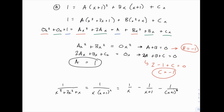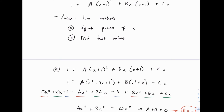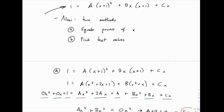So that's one approach — expand everything out and equate the powers of x. If you like that method and it works for you, you can use it every single time. But I'll show you the second method, which uses test values. We go back to the non-fraction version of the equation and start picking test values to solve for a, b, and c.